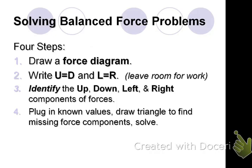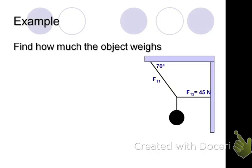We're going to look at an example and see how we can apply these steps. Here we have a problem. Find how much the object weighs. We have an object hanging by a couple of strings here. We can see there's a tension 1 and a tension 2, and there's an angle there with the ceiling. And we can see that the tension in string 2 is 45 newtons. And we want to find how much the object weighs.